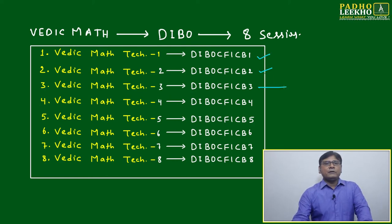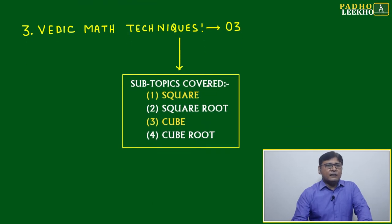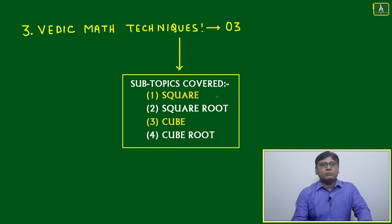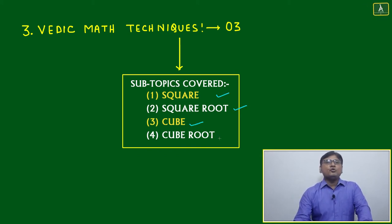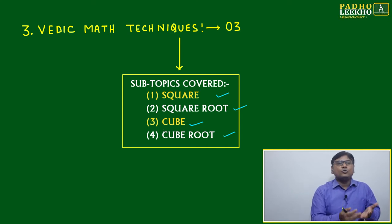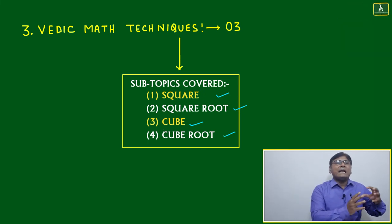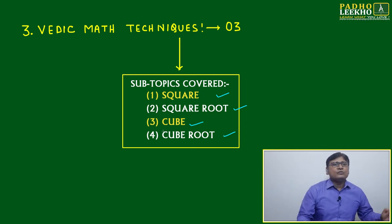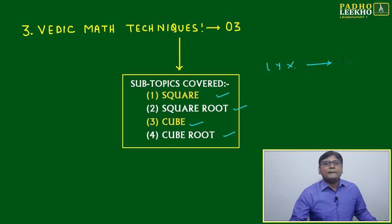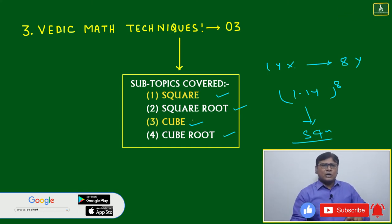Out of the 69 sessions, eight sessions will be fundamental sessions mainly related to Vedic math technique. We have done sessions one and two; today we are going to do the third session — Vedic Math Technique Three. In this session I will discuss in detail all techniques related to how to find the square of numbers, the square root, the cube, and the cube root. For example, suppose a 14% change happens over eight years — how to calculate 1.14 to the power 8. We apply the square technique and break it down.